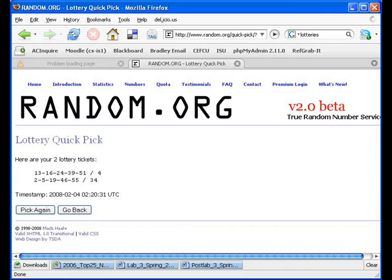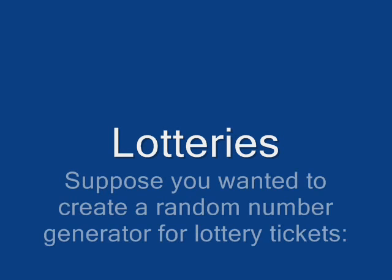The first class we're going to look at, actually the second class because we've already worked with scanners and scanners are a class. The next one is random. And random helps us generate random numbers. Lotteries for example are a good example to look at for creating random numbers. If you proceed over to random.org, www.random.org,